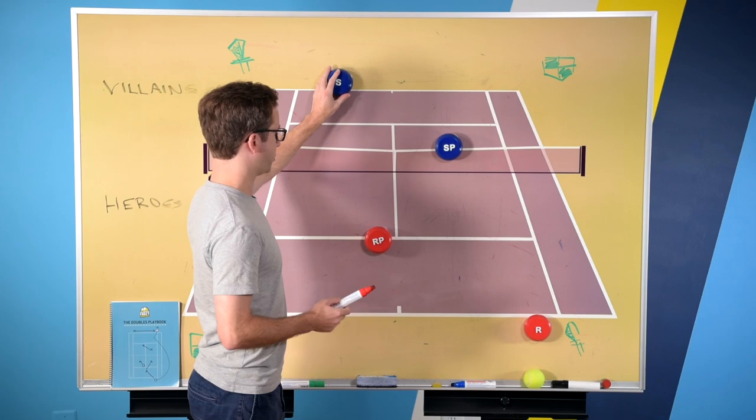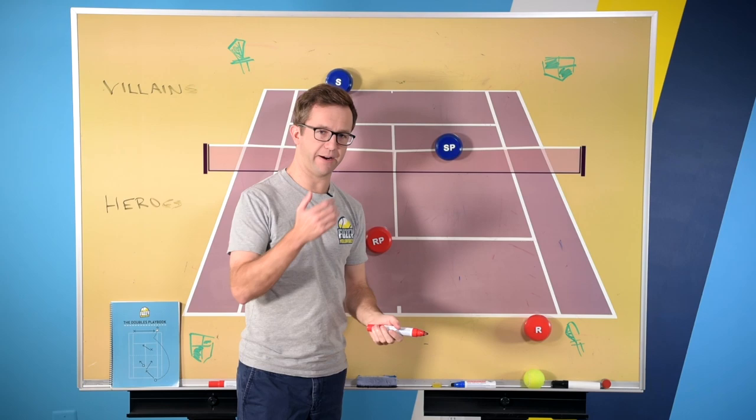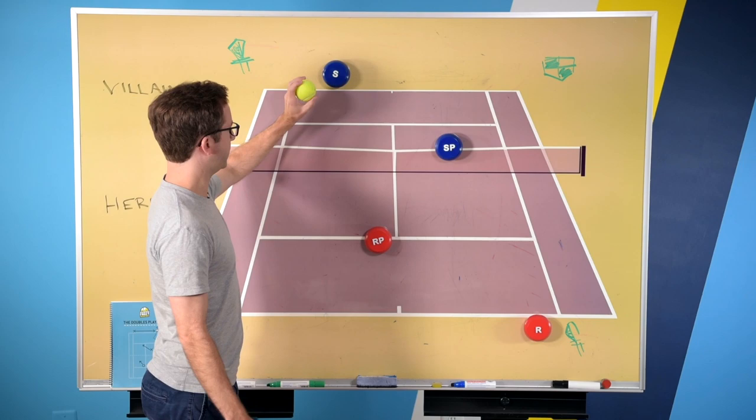But then the question is what type of return should you hit? If you drive your return, normal ground stroke, that actually gives the server a lot of options. We worked with Martina Navratilova. You might have seen some of our segments with her. But one of the main things she said, she said, if you hit a shot, kind of a standard ground stroke, or a volley that is deep and kind of high, waist high,